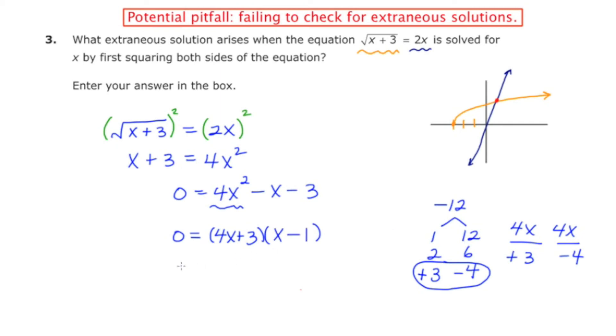Now using the zero product property, I'm going to set each factor equal to 0 and solve. So I'll start with 4x + 3 = 0, and that's going to leave me with x = -3/4. And the second answer that I get is x = 1. So in doing this problem algebraically, we get two answers: x = -3/4 and x = 1.